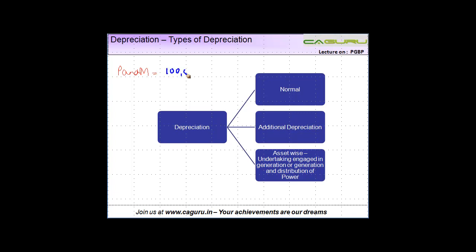You buy it for 1 lakh. And the rate of depreciation is say 10%. So depreciation at 10% of 1 lakh will be 10,000. This is what you have been doing till now. And this is what is called normal depreciation.